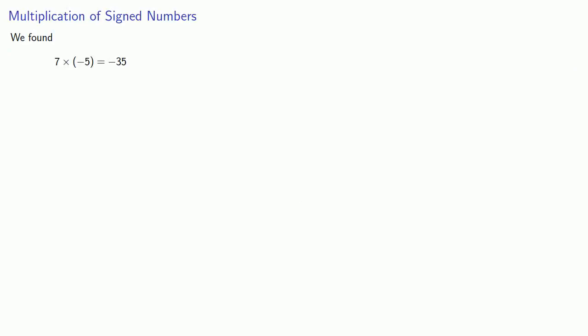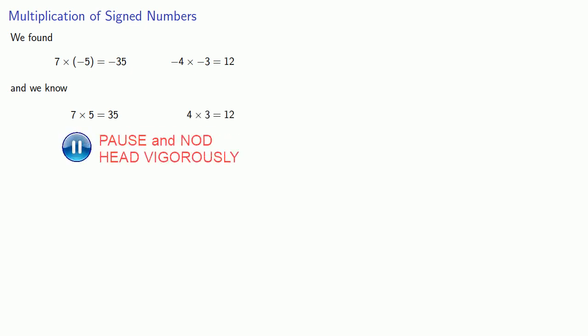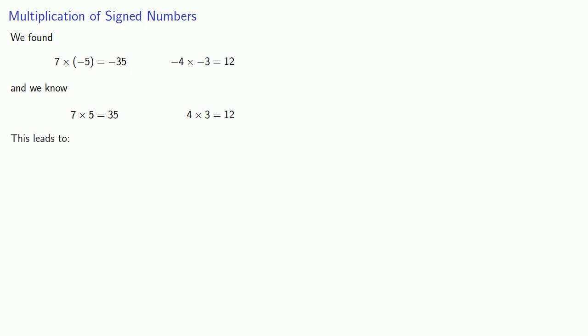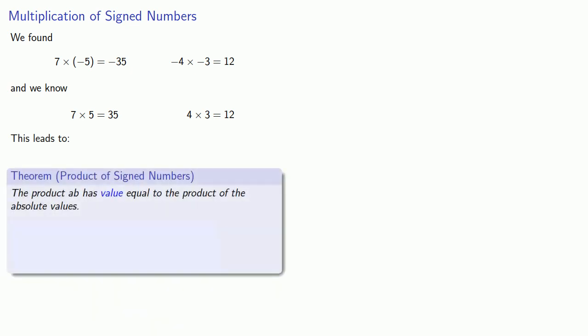So we found that 7 times negative 5 is negative 35, and negative 4 times negative 3 is 12. If we ignore the signs for a moment, 7 times 5 is 35, and 4 times 3 is 12 — the same numbers, just with signs distributed. This leads to the following result: the product AB has a value equal to the product of the absolute values, and the sign of the product will be positive if both factors have the same sign, and negative if they have opposite signs.